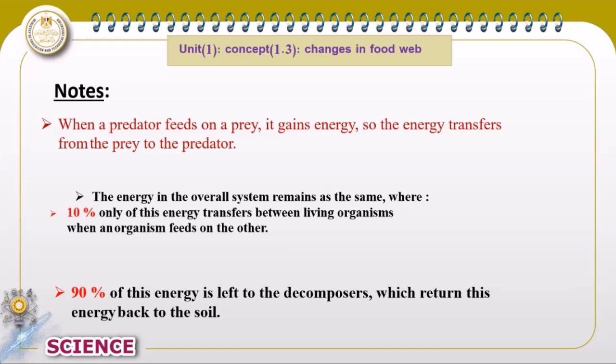When a predator feeds on prey, for example the shark feeding on a butterfly fish, it gains energy. Energy transfers from the prey to the predator. The total amount of energy in the ecosystem remains the same, but the energy transfers from one living organism to another.